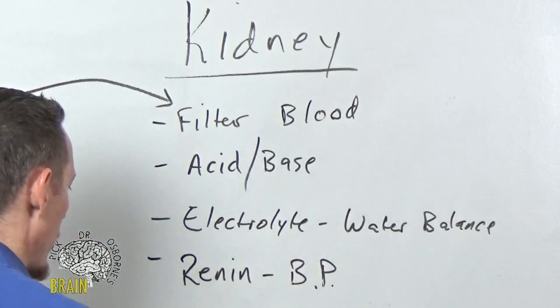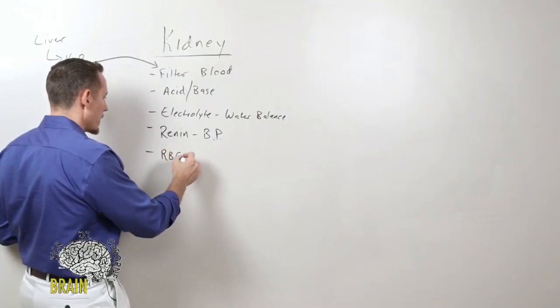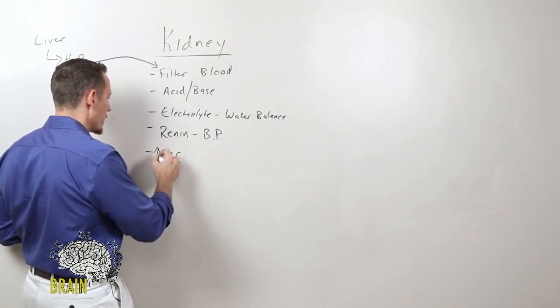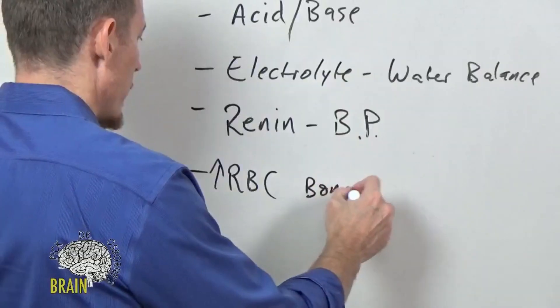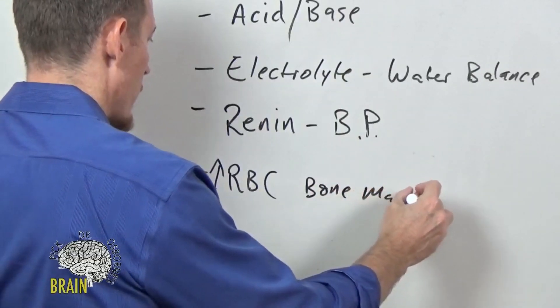There's also a compound called erythropoietin that your kidney makes. It's a hormone that drives or increases the production of red blood cells from the bone marrow. So the kidney plays a role in that as a function.